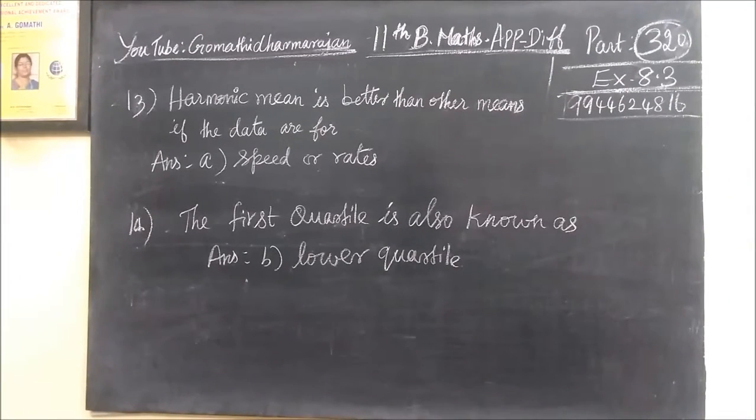Coming to the thirteenth question, harmonic mean is better than other means if the data are for speed or rates. And fourteenth one, the first quartile is also known as lower quartile.